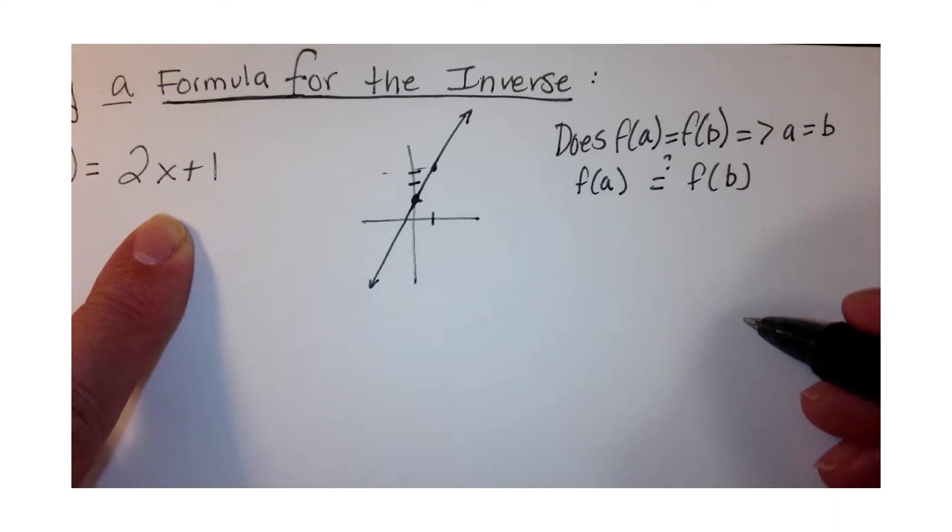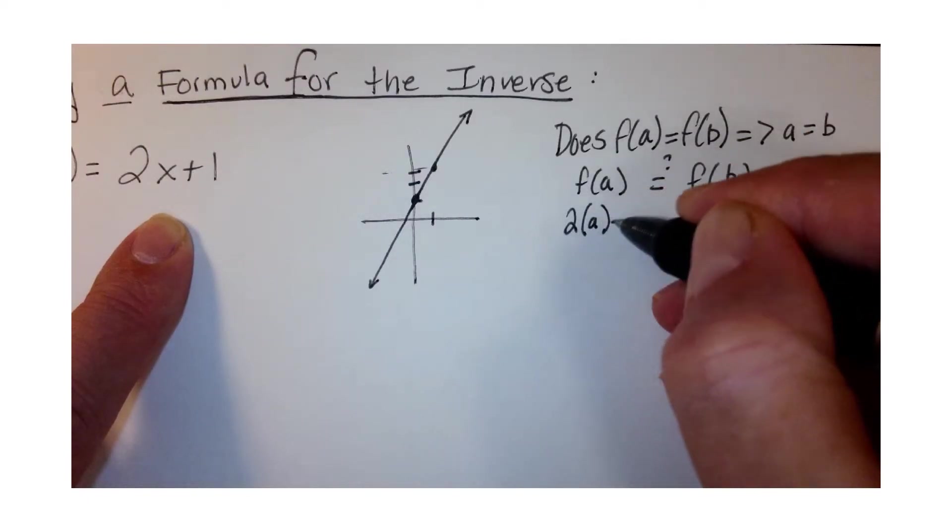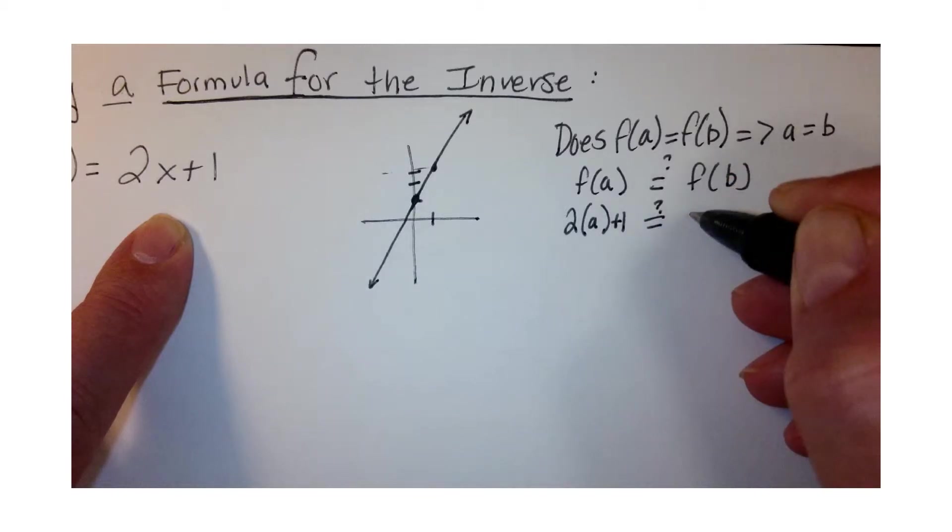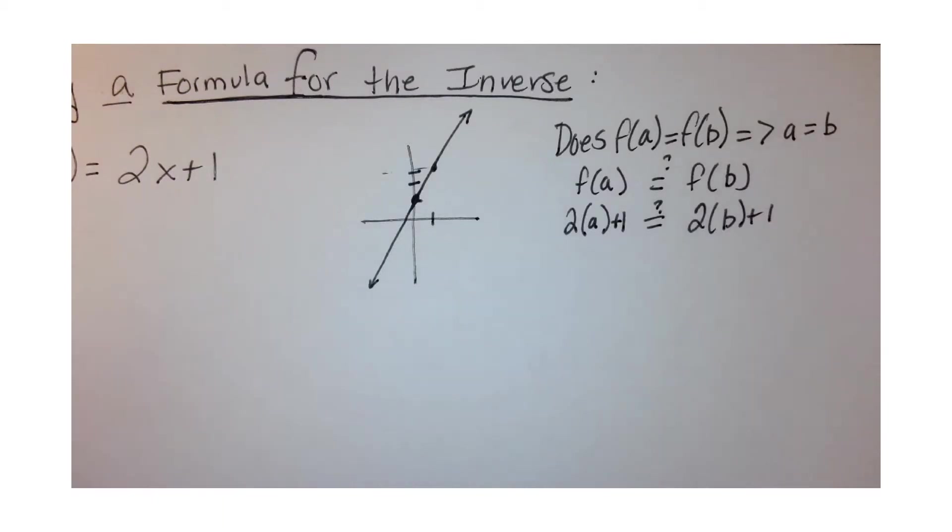So this is going to be 2a + 1, this is going to be 2b + 1. We don't really need the parentheses, but I did put them in.